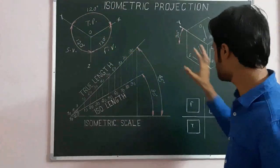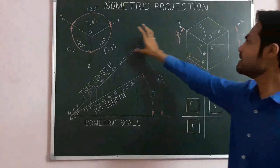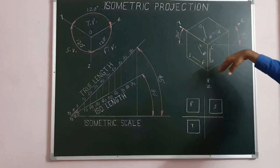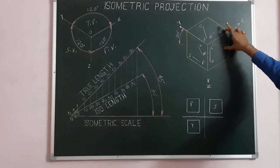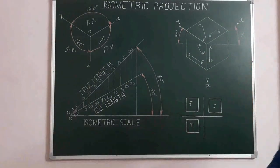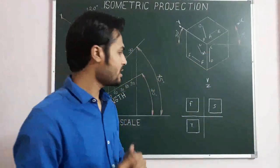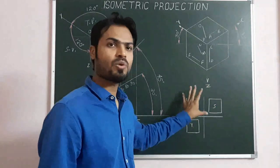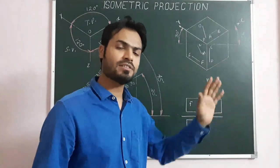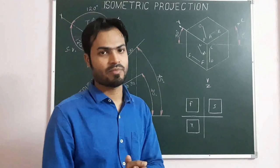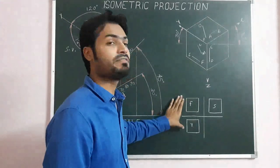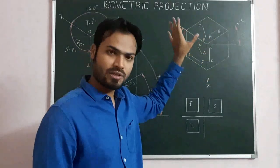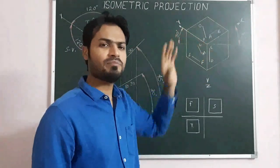Now comparing these two schemes — orthographic projection and isometric projection. This is the isometric projection of a cube, and this one is the orthographic projection of the same cube. For us, it is very simple and easy to understand the meaning of all these squares because we know the basic concepts of orthographic projection. But for a normal person, it is very difficult to understand. For them, this pictorial projection is very simple to understand.